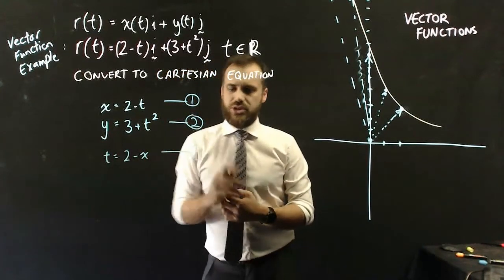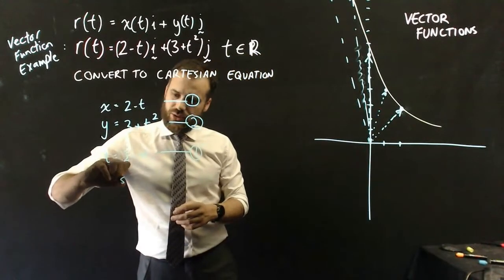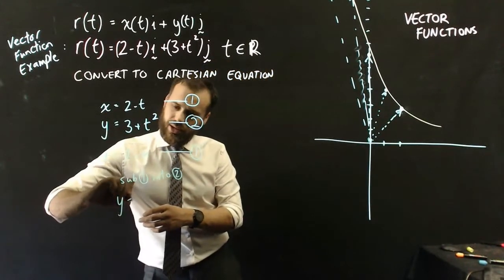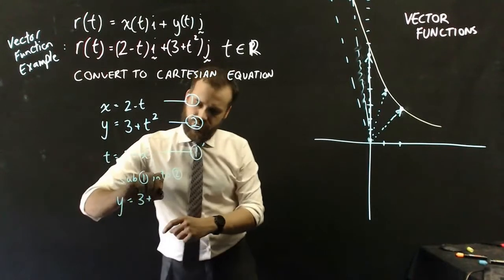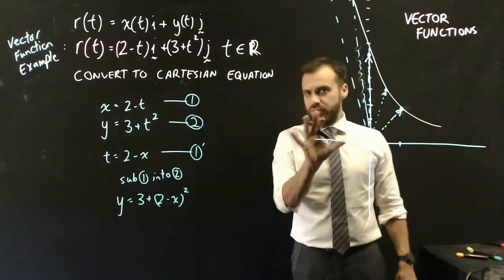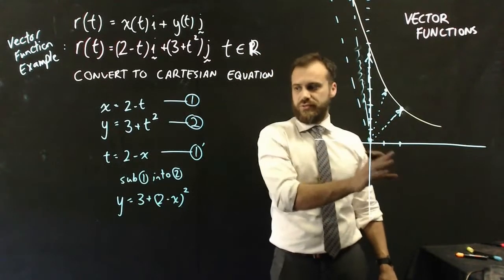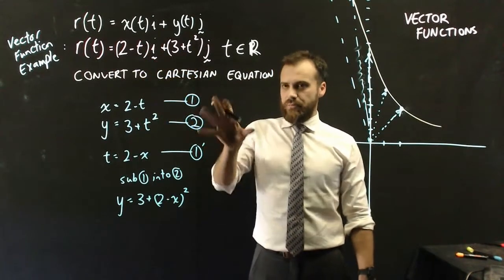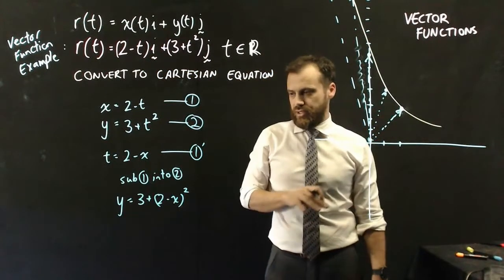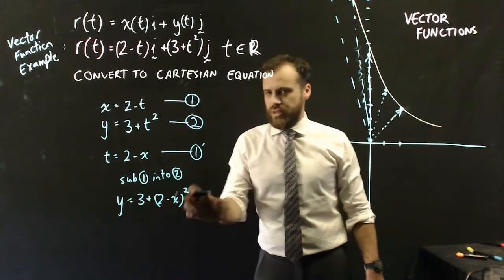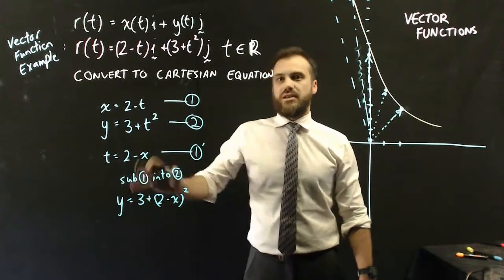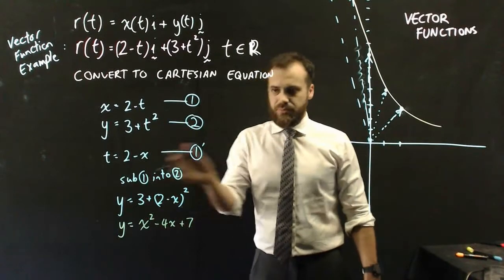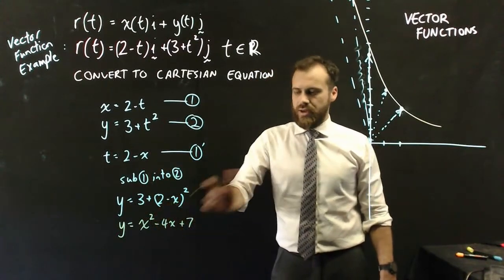Now I can substitute equation 1 into equation 2. Doing that, I get y equals 3 plus (2 minus x) squared. This gives the equation in terms of just x and y, eliminating t. It may be more useful to expand the brackets to get the form ax squared plus bx plus c. Expanding gives y equals x squared minus 4x plus 7.